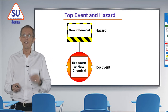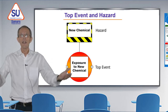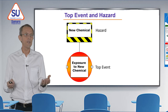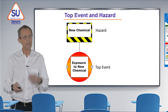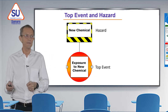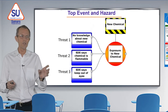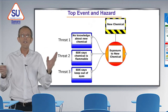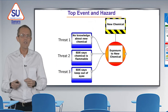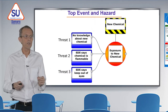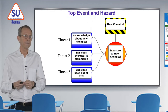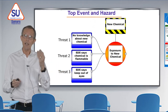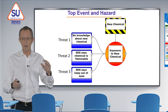In our case the hazard is a new chemical — it could be any chemical coming into your business. The top event will be a harmful exposure to that new chemical. In this tutorial we'll go with three threats: threat one is we know nothing about the new chemical; threat two is when we find out about it, it's flammable; and threat three is that it's harmful to the eyes.